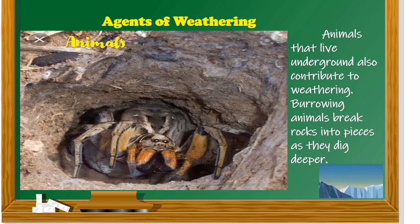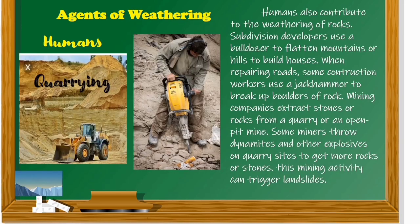Animals: animals that live underground also contribute to weathering. Burrowing animals break rocks into pieces as they dig deeper. Humans: humans also contribute to the weathering of rocks. Subdivision developers use a bulldozer to flatten mountains or hills to build houses. When repairing roads, some construction workers use a jackhammer to break up boulders of rock. Mining companies extract stones or rocks from a quarry or open pit mine. Some miners throw dynamite and other explosives on quarry sites to get more rocks or stones, and this mining activity can trigger landslides.